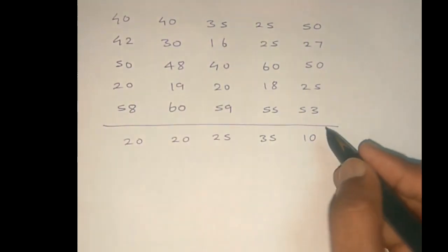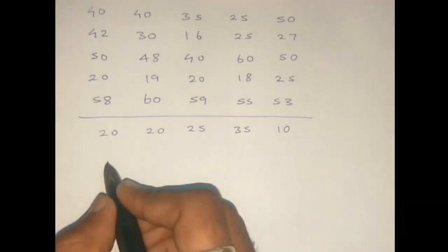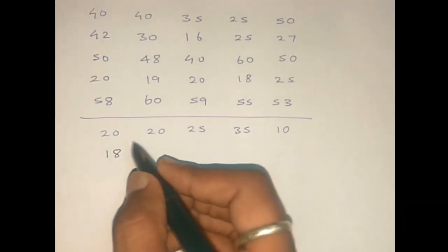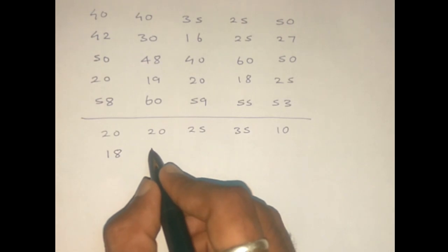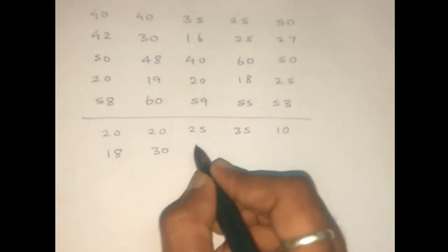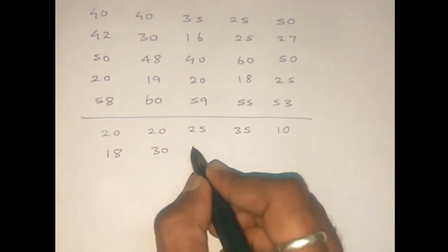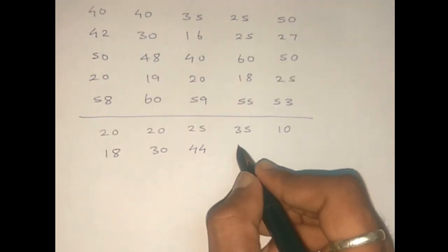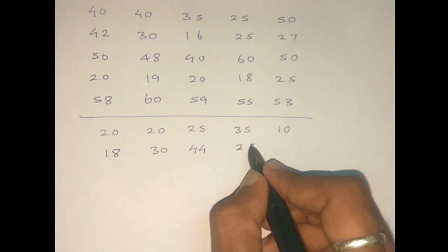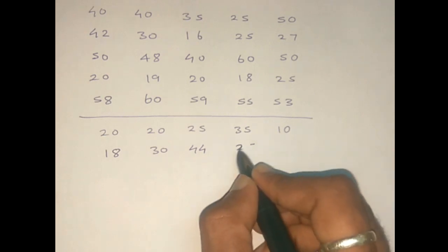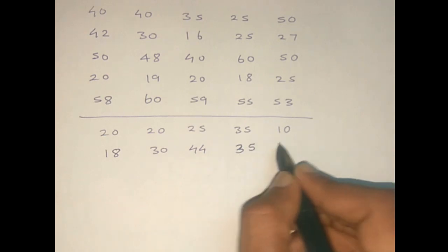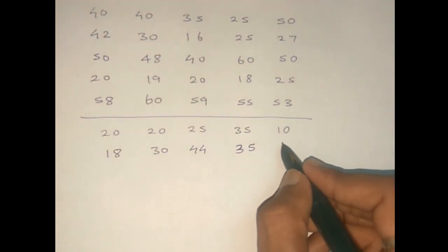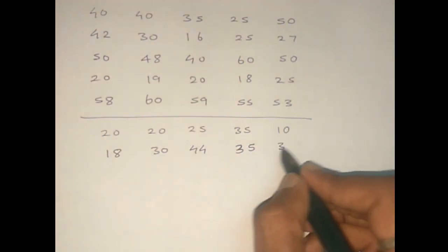Continuing the matrix values: 60, 50, 10; 60, 42, 18; 60, 30, 30; 60, 16, 44; 60, 35, 20; 60, 25, 35; 60, 27, 33.